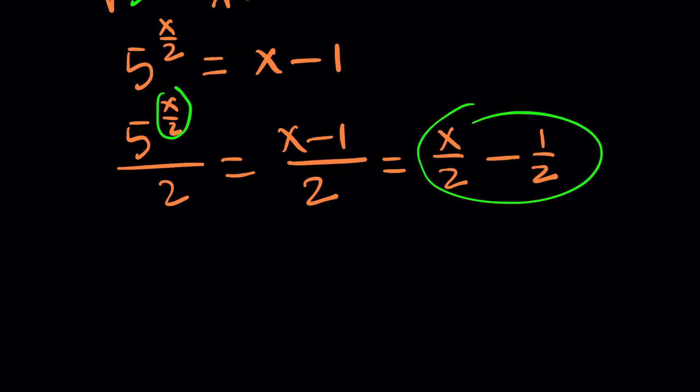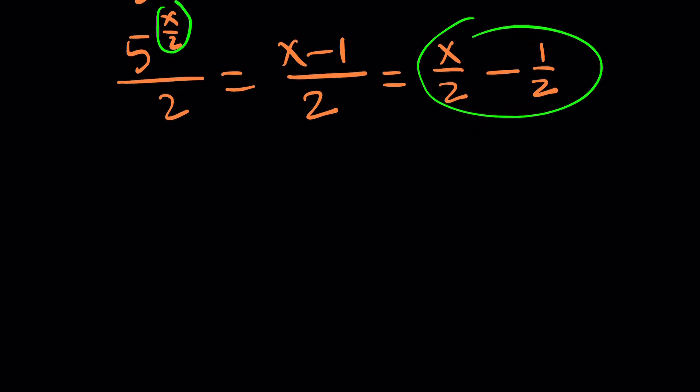But notice that dividing by 2 brings us closer because you can go ahead and separate this and write it as x over 2 minus 1 half. Now, notice that x over 2 and x over 2 minus 1 half are pretty close. What can I do with that?